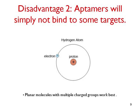Disadvantage 2. Aptamers will not bind to some targets, such as the hydrogen molecule demonstrated here. Targets that work best for aptamers are molecules that exhibit some general affinity for DNA. The ability to intercalate into DNA is helpful. We prefer molecules that are planar rather than molecules that can assume many shapes. Proteins and peptides are great targets though, because they provide an abundance of target sites.